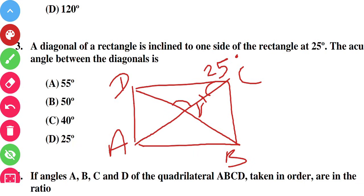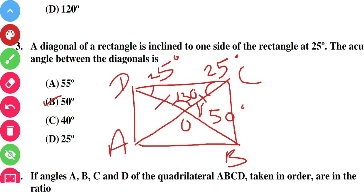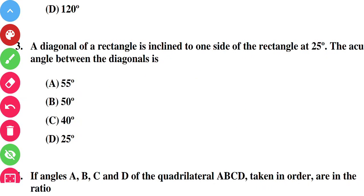This angle is 25 degrees. Since the diagonals of a rectangle bisect each other and are equal in length, the opposite angles are equal, so this angle is also 25 degrees. Therefore, by angle sum property of triangle, 180 minus (25 + 25) = 130 degrees for that angle, and by linear pair the acute angle between the diagonals is 50 degrees.